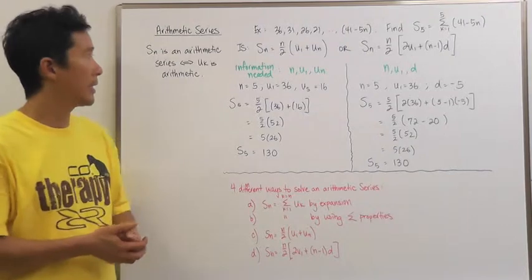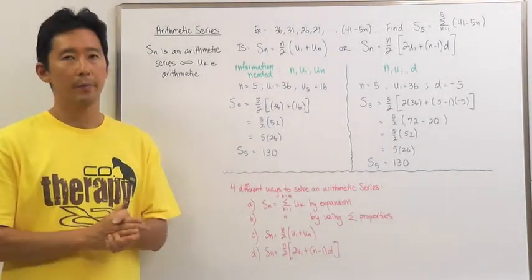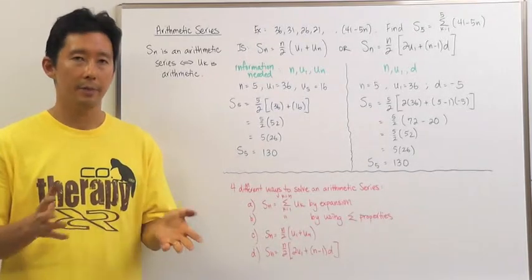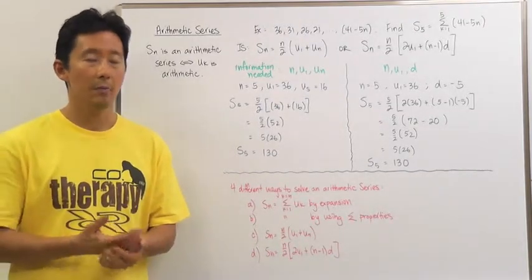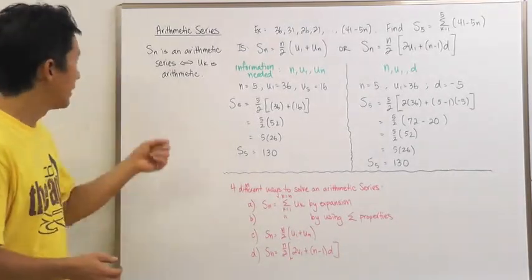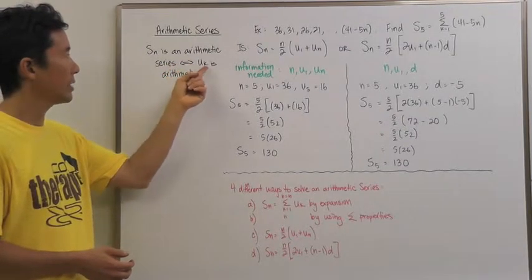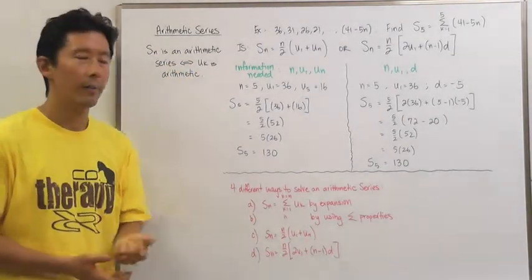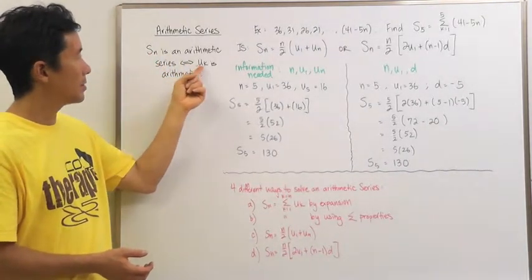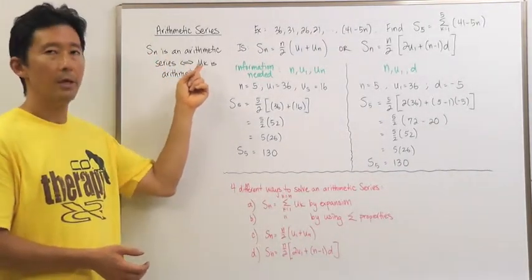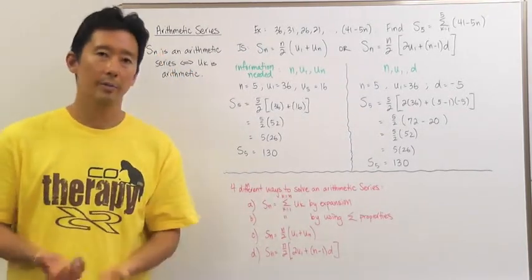Hello everyone, let's go ahead and take a look at arithmetic series. In the same respect when we talked about sequences and the different types of sequences, we also have different types of series, and one of them is the arithmetic series. S of N, or the series, is an arithmetic series if and only if the sequence is arithmetic — that is, if U sub K is arithmetic.